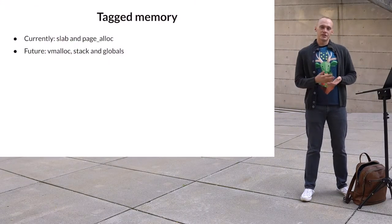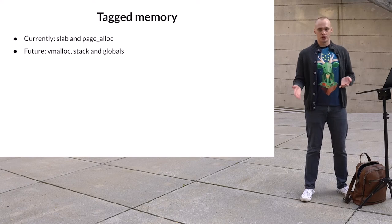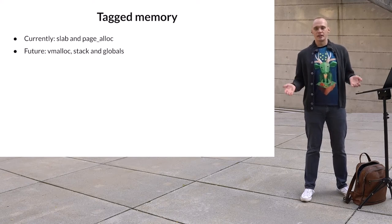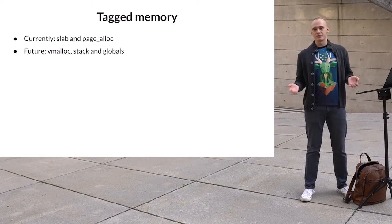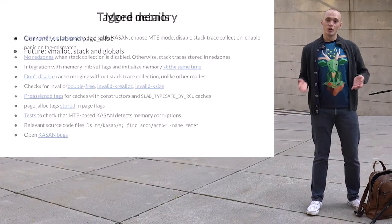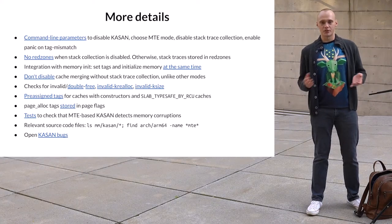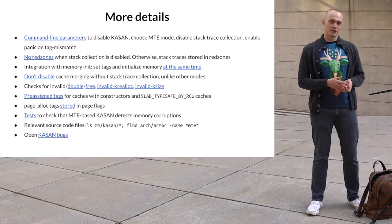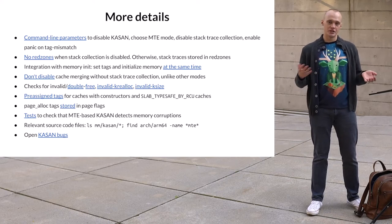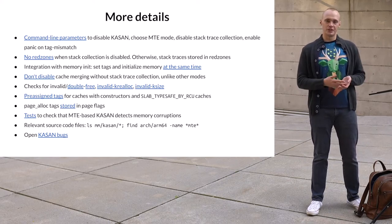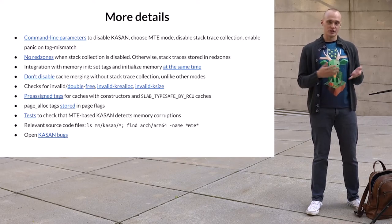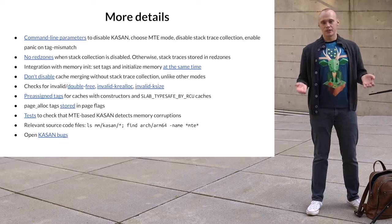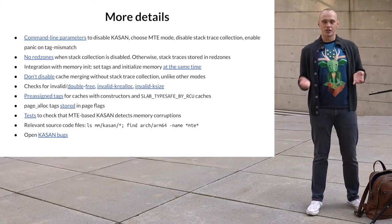Currently, MTE-based KASAN only tags memory returned from the slab and page local allocators. There is no tagging in vmalloc, and there are also no tag checks for stack and global variables. However, all these might be implemented in the future. There are command-line parameters to disable KASAN or choose between the sync and async mode. There are additional tag checks to detect double-free and other types of memory corruptions, and there are tests to make sure in-kernel MTE actually detects bugs.